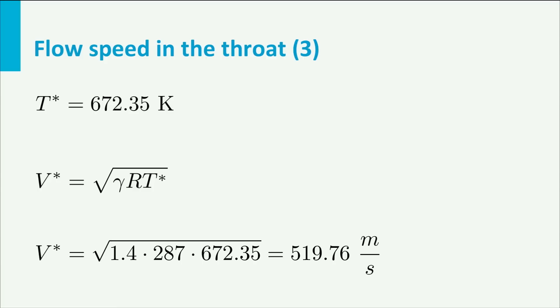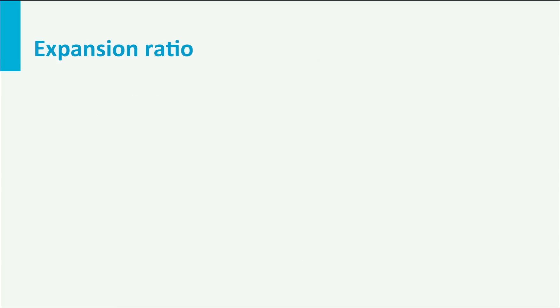Finally, the expansion ratio: the ratio between the areas of the test section and the throat. The most suited equation for this is the continuity equation. Since both are in it, let's write that the mass flow through the test section equals the mass flow through the throat. So the expansion ratio equals (ρ*V*)/(ρTS VTS).